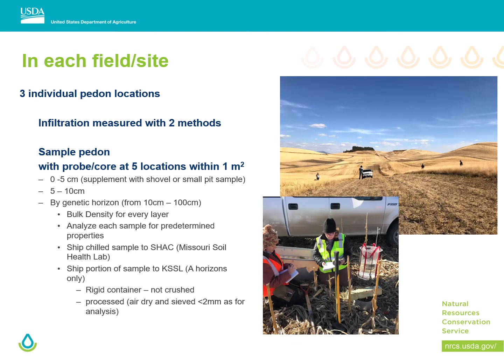There were three separate pedons within each location. They took surface measurements like infiltration and then sampled down in a typical pedon with depth. We sampled at zero to five and five to ten centimeters to capture the really active surface layer, and then went by genetic horizon below that in order to link up with soil survey databases. We also did bulk density, analyzed many properties at the cooperator lab, and sent some samples to the Soil Health Assessment Center and some to KSSL.